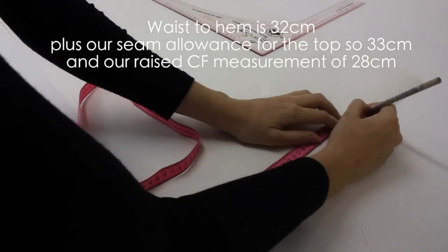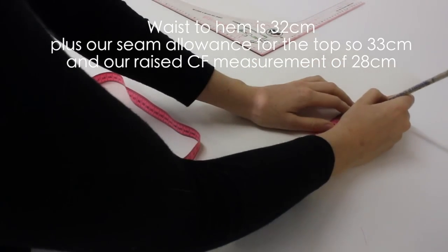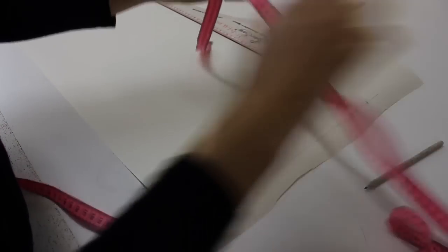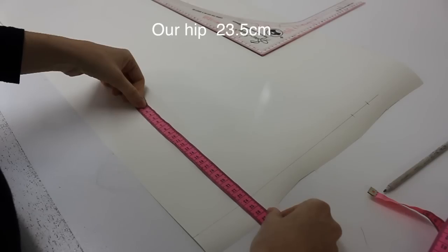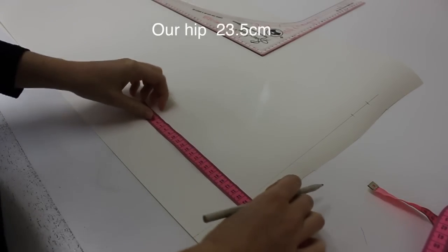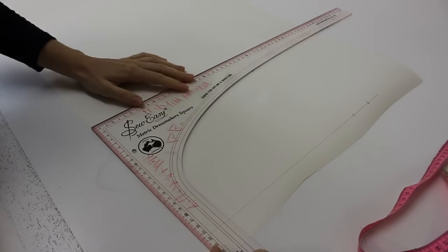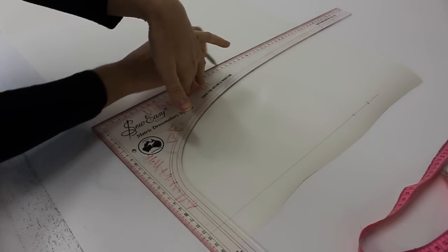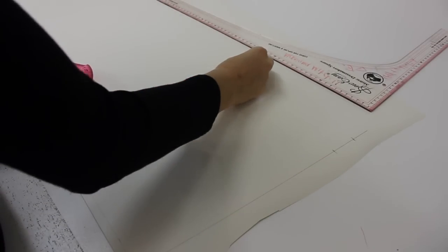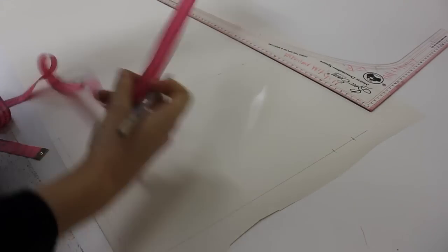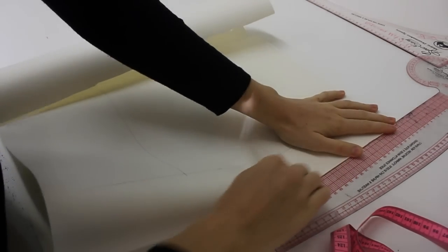Along that line I will be placing two measurements. The first of which is our waist to hip measurement plus 1cm seam allowance for the top, so 32cm. And then the second measurement I'm going to place is our raised centre front measurement, which is 28cm. Now I'm going to work on creating our grid. Measuring across from that right angle line, I'm putting 1/4 of our hip measurement, which for me is 23.5cm. I'm just going to draw two little marking lines at 23.5 out and use my ruler to right angle down. Basically we've got four sides of our pattern that we want.